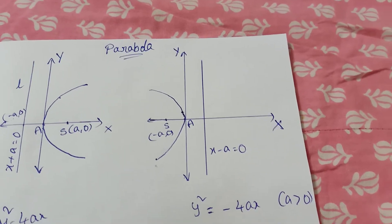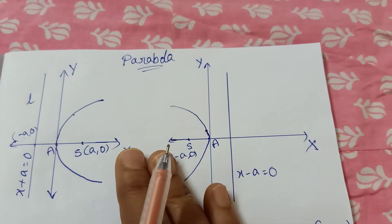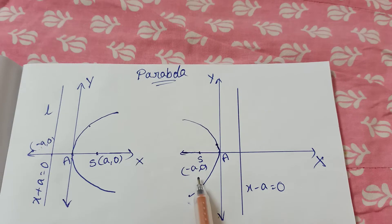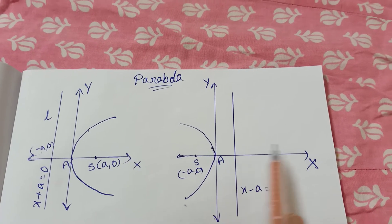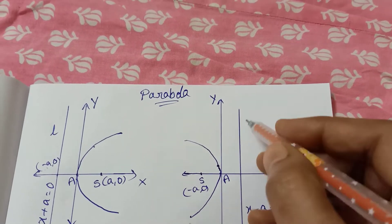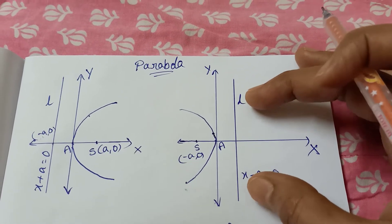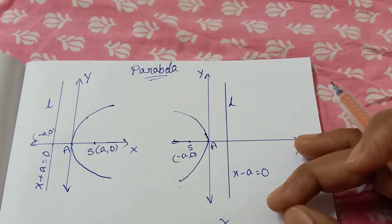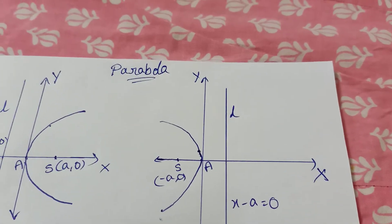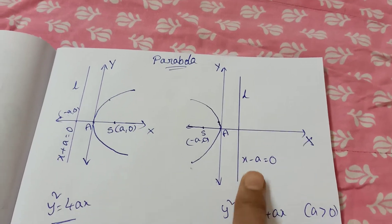Next, y squared equals minus 4ax. This curve opens to the left. The focus is at minus a, 0. The vertex is at the origin (0, 0), passing through the origin. The directrix equation: since the focus is at (a, 0), the directrix is x equals a, that is x minus a equal to 0.